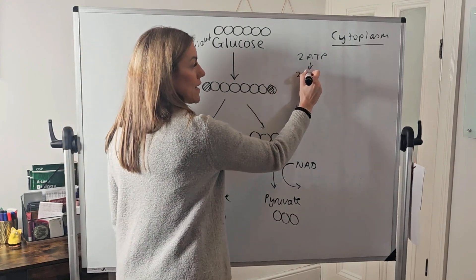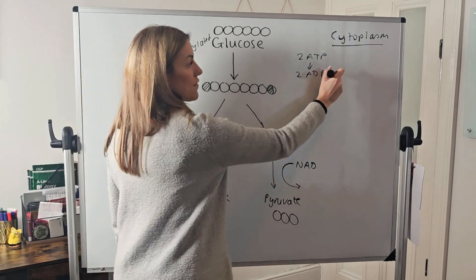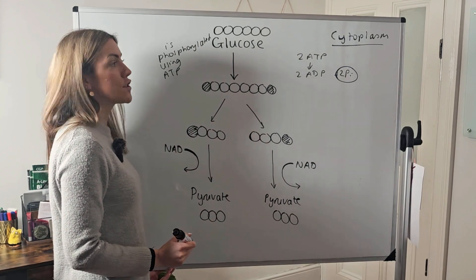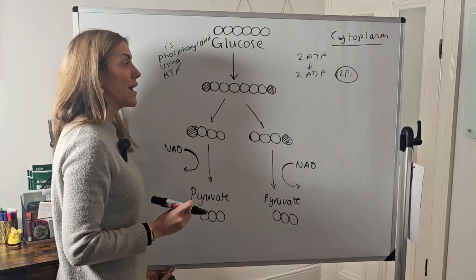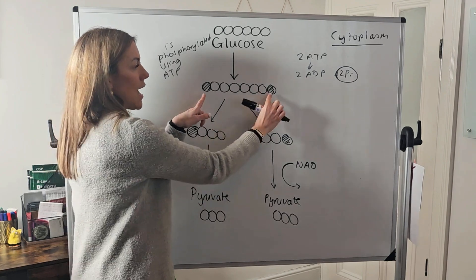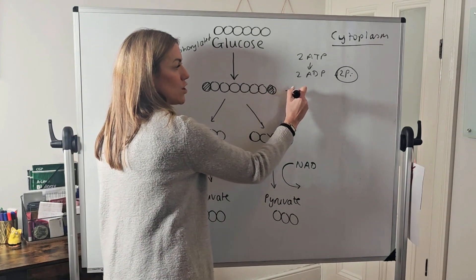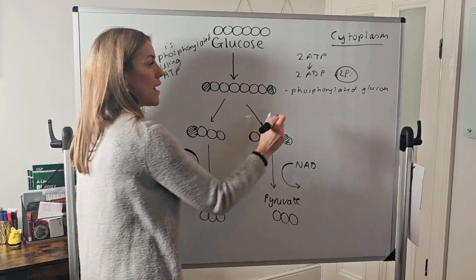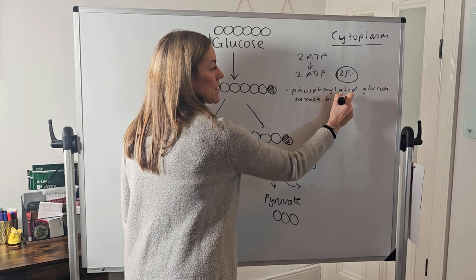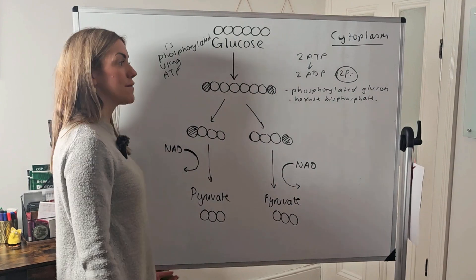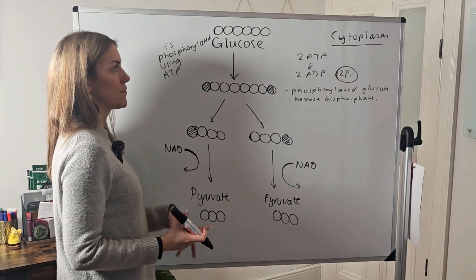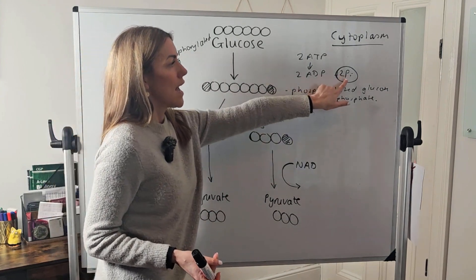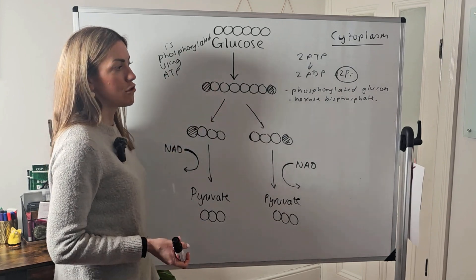If we hydrolyse those two ATP, it gives us two ADP and two inorganic phosphates. It's these two inorganic phosphates that we use to phosphorylate the glucose — we literally take those two inorganic phosphates, shown as the black circles, and add them onto the glucose. This produces phosphorylated glucose, or hexose bisphosphate, though for AQA it's fine to just call it phosphorylated glucose.